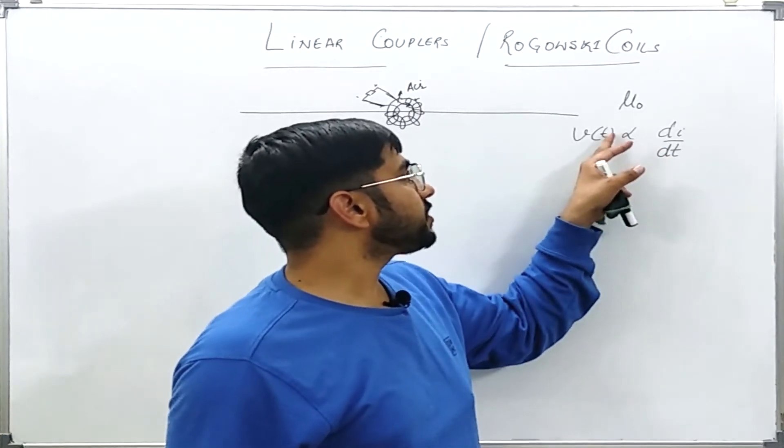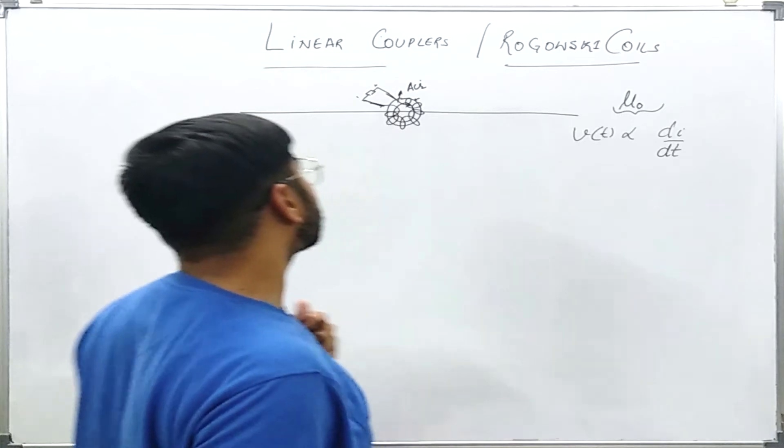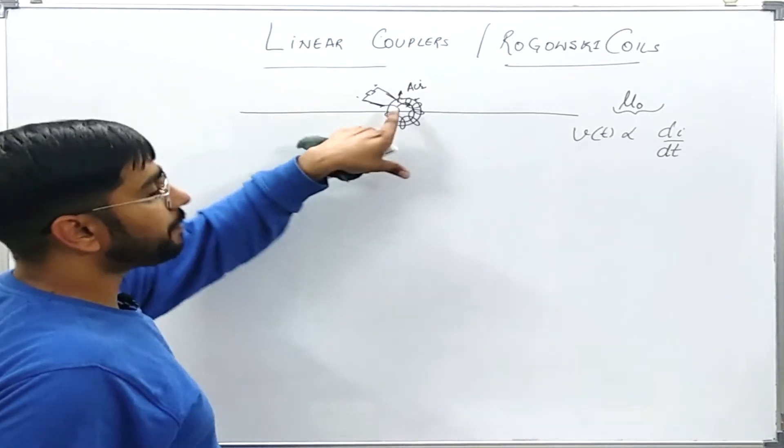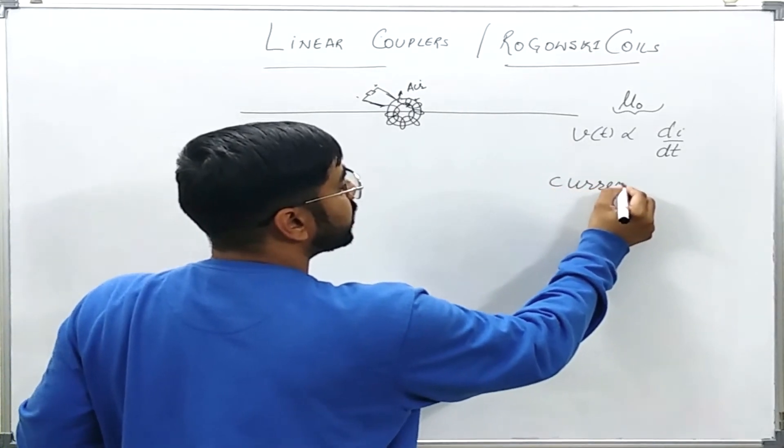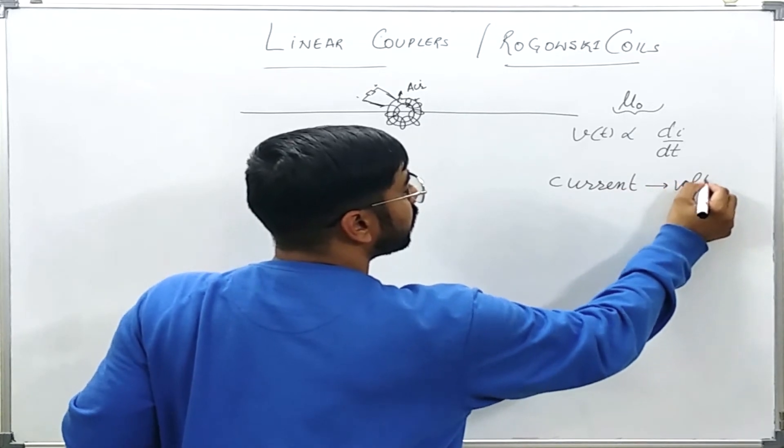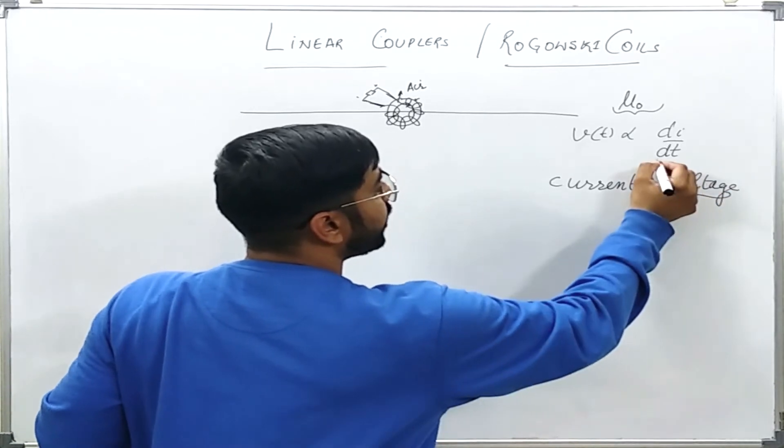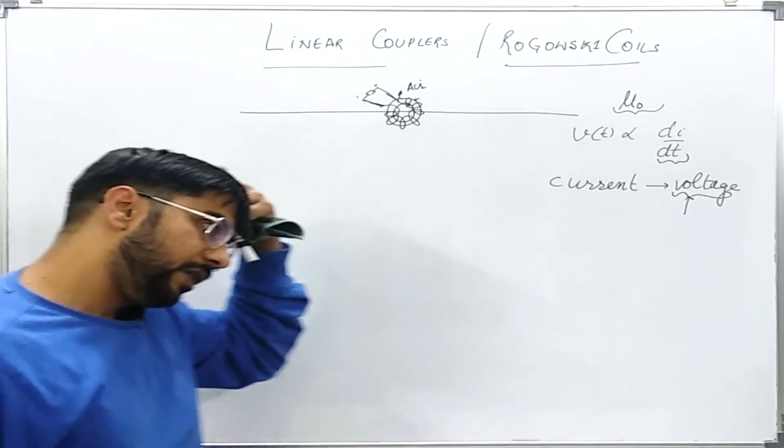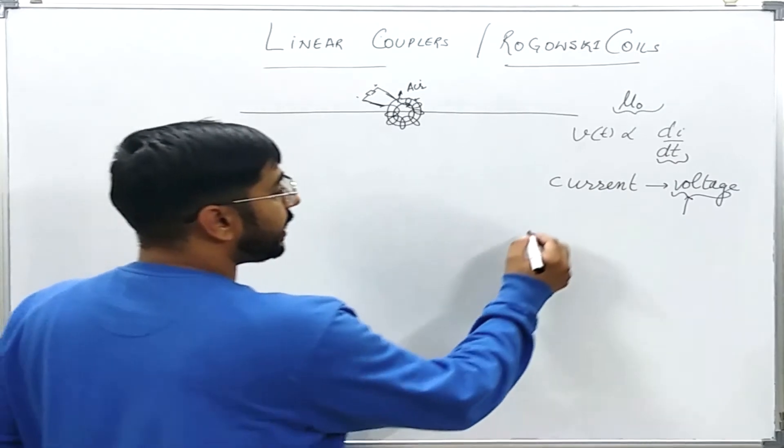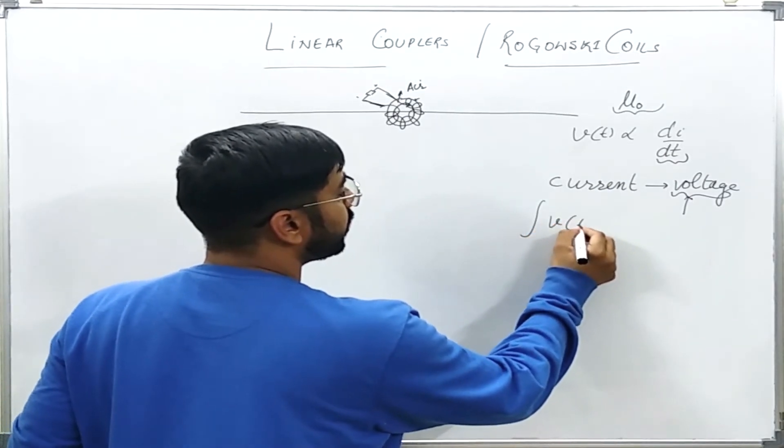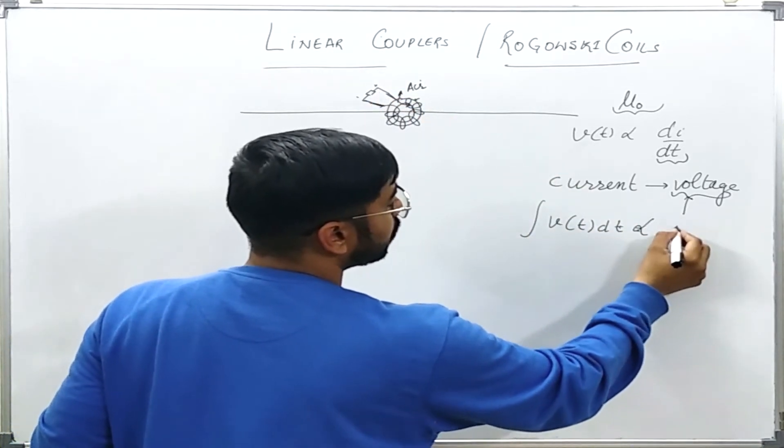This rate of change will be linear because of a fixed permeability. There is no saturation phenomena. This kind of linear couplers will work as kind of current to voltage source converters. This voltage will be linearly proportional to rate of change of the primary current. What we will do? To read the current directly we will put an integrator which will integrate the output of this coil. That thing will be proportional to IT.